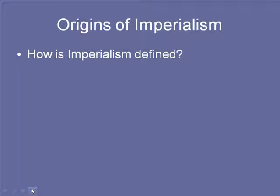How is imperialism defined? The standard definition is that imperialism is the expansion of European powers and their conquest and colonization of African and Asian societies, mainly from the 16th century through the 19th century.